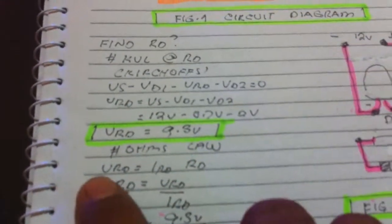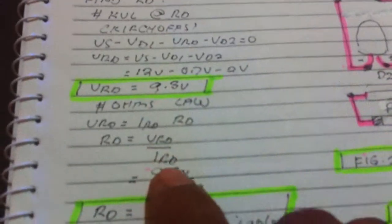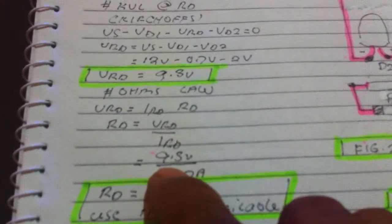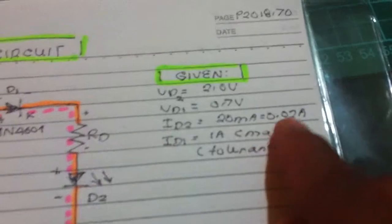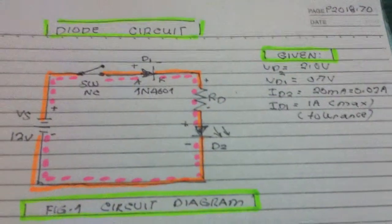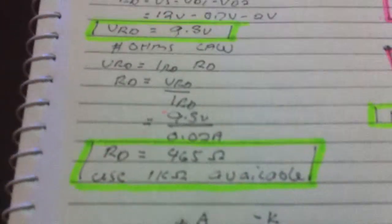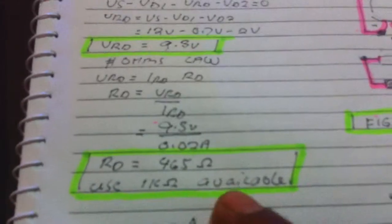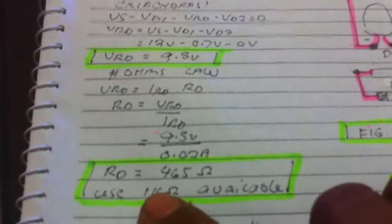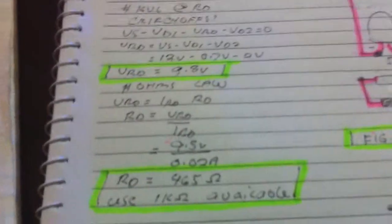Using Ohm's Law, resistance equals voltage over current: 9.3 divided by 0.02 amperes. We are using 0.02 amperes - the current needed to turn on the LED. Since the 1N4001 has a 1 ampere maximum rating, it can handle this 0.02 amperes. We get 465 ohms, and I use a 1 kilo ohm available resistor - that is acceptable.